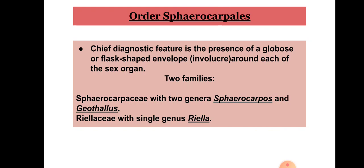In Sphaerocarpaceae there are two genera: Sphaerocarpos and Geothallus. In Riellaceae there is only a single genus, Riella. In this video I will deal with Sphaerocarpos, which belongs to family Sphaerocarpaceae and order Sphaerocarpales.